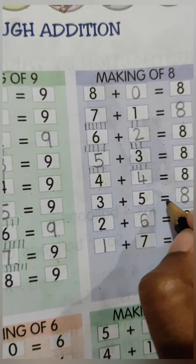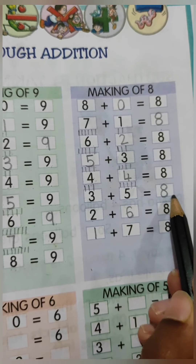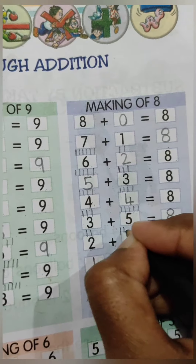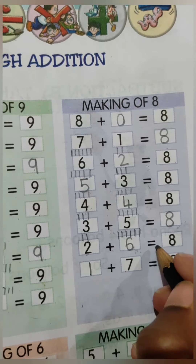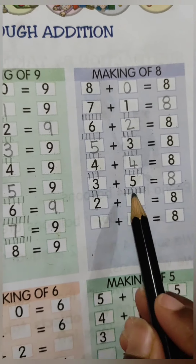3 plus 5 is equal to कितना? 3 के ऊपर कितनी lines हैं? Draw 3 lines then 1 through 5 more. Count together: 1, 2, 3, 4, 5, 6, 7, 8. 3 plus 5 is equal to 8. So we will write here 8. 2 plus blank is equal to 8. 2 में कितना add करने से 8 बनेगा? Draw 2 lines through 8. Count remaining: 1, 2, 3, 4, 5, 6. So we will write here 6. 2 plus 6 is equal to 8. Count together: 1 through 8. टोटल हमारा 8 है.